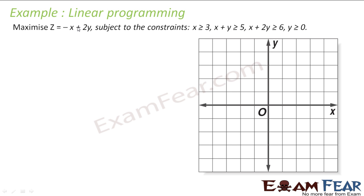Here in the next example, we have to maximize Z = -x + 2y. We have the constraint x > 3. Let me draw the line x = 3 on the graph. I will draw this in this fashion - this is my line x = 3. What I am looking for is x > 3, so my feasible region is on this side.